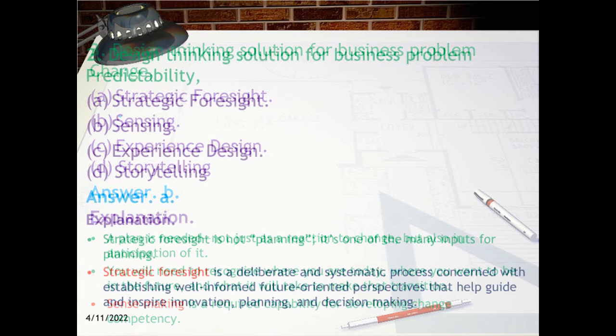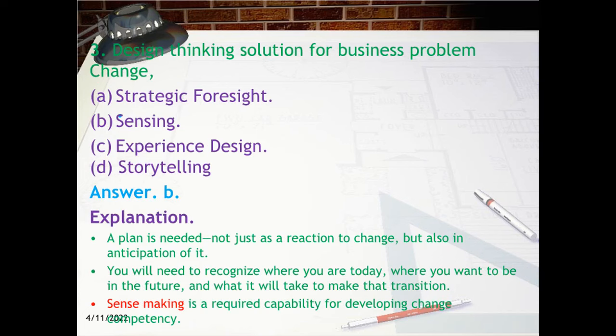Question 3: Design Thinking Solution for Business Problem — Change. Options: A. Strategic Foresight, B. Sensing, C. Experience Design, D. Storytelling. Answer: B. Sensing.